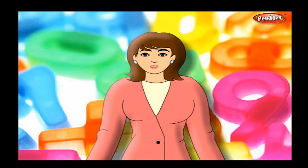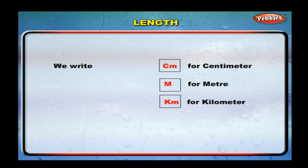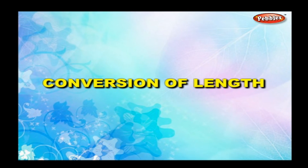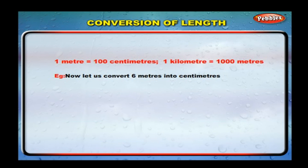Centimeter, meter, and kilometer are the standard units of length. They are used depending on how large the length or distance is. We write cm for centimeter, m for meter, and km for kilometer. Conversion of length: one meter is equal to one hundred centimeters, and one kilometer is equal to one thousand meters.